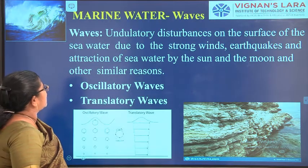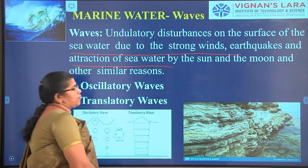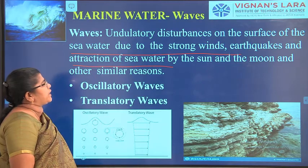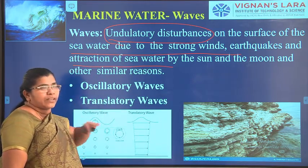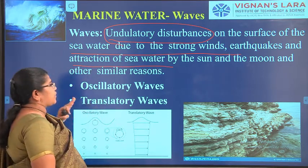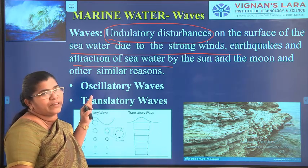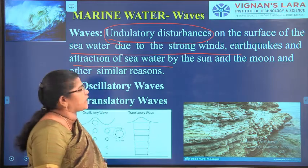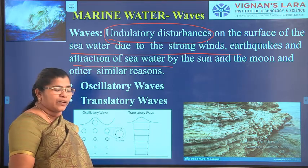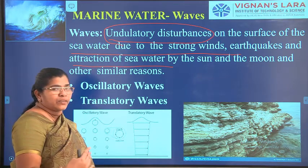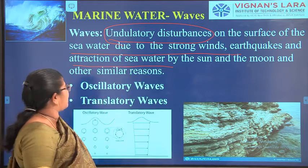Waves are undulatory disturbances on the surface of seawater due to strong winds, earthquakes, and the attraction of seawater by the sun and moon. The waves are not regular disturbances. They may be caused by strong wind, underground earthquakes — which can even cause tsunamis — and the effect of the sun and moon. In the no-moon season, the seawater rises to a much higher level than in the full moon season.